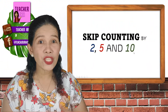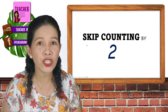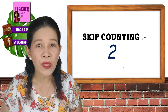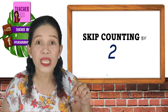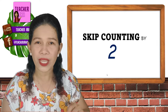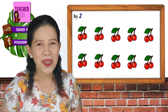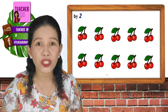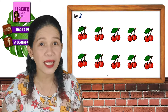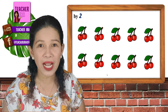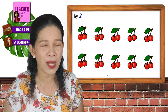Now, let us go to skip counting by 2. With this one, you will skip one number and you will go straight to the second number in line. Let me show you that. I have here cherries. If you would look at the cherries, they look plenty, but we can count by 2s to make our counting easier. And that is skip counting.